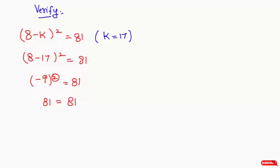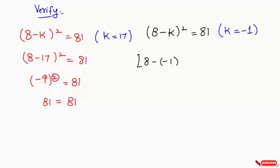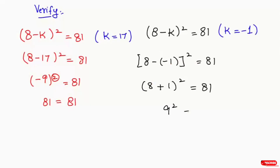The left hand side equals the right hand side. Now for the other case: (8 minus k) whole to the power of 2 equals 81, where k equals minus 1. So 8 minus (minus 1) whole to the power of 2 equals 81. The double negative gives plus 1, so 9 to the power of 2 equals 81. Left hand side equals the right hand side, so k equals negative 1 is also correct. Thank you for watching. If you like the video, please hit the like button and subscribe.